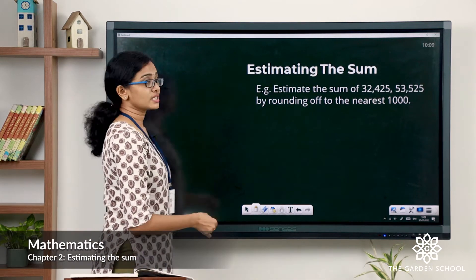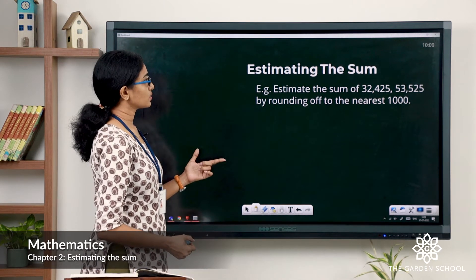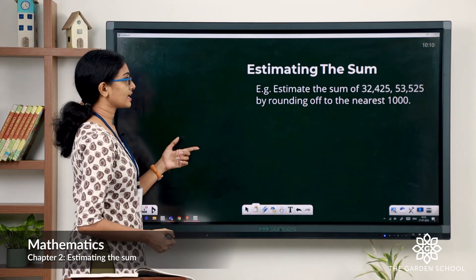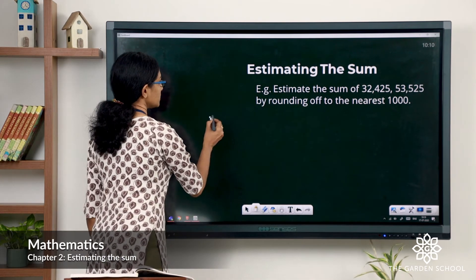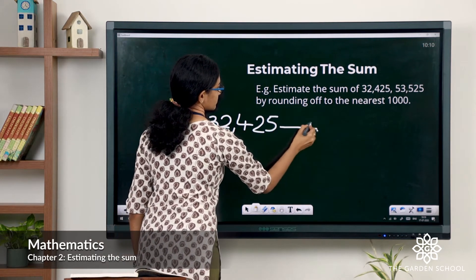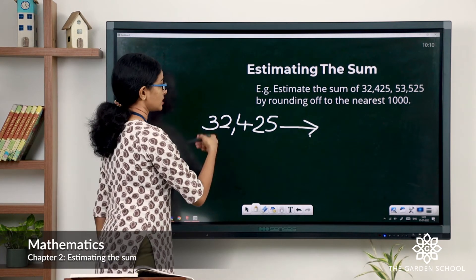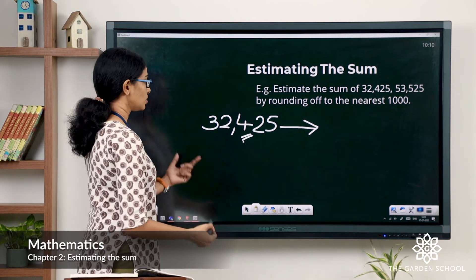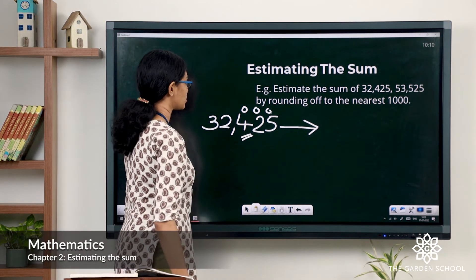Now let's see one more example. Estimate the sum of 32,425 and 53,525 by rounding off to the nearest thousand. In this case you are asked to round off the addends to the nearest thousand. The rounding digit is the thousands digit. The digit to the right of it is the hundreds digit, which is 4 — that is less than 5. So keep the rounding digit as it is and change the hundreds, tens, and ones to zeros.